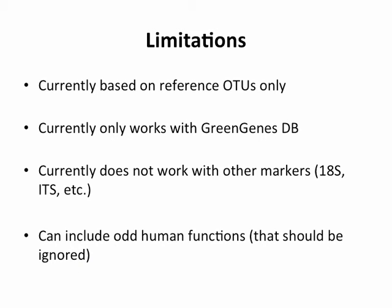So let me readdress the limitations. First, PICRUSt is currently based only on reference OTUs. If you do open reference OTU picking in QIIME, you can use PICRUSt but you have to filter out your de novo OTUs and do predictions off only the reference ones — not super satisfying. Second, it currently only works for the GreenGenes database. If you're using Silva or RDP, unfortunately that's not supported. Third, it only works for 16S data right now — people have asked about 18S or ITS for fungal functional predictions, and we've considered trying it for things like yeast.